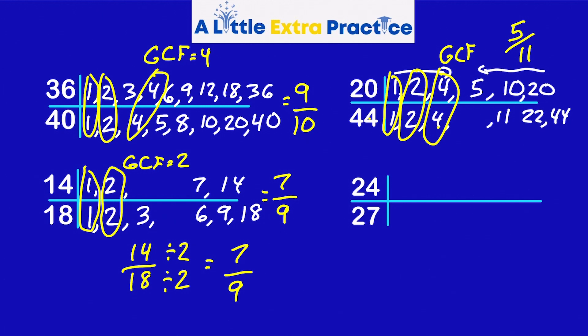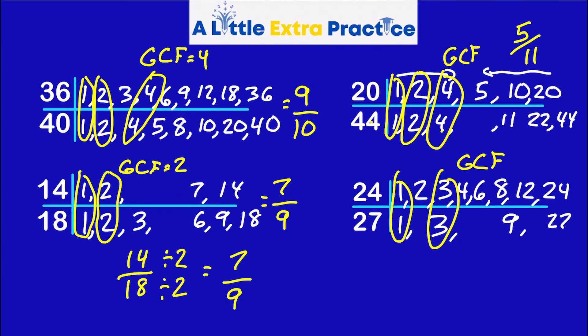24: One and 24, two and 12, three times eight, get my commas in here, four times six. 27: One times 27, three times nine. And that's it for 27. You have a one and a three. So the GCF is three. 24 divided by three is eight, 27 divided by three is nine. 24/27 simplifies to eight-ninths.